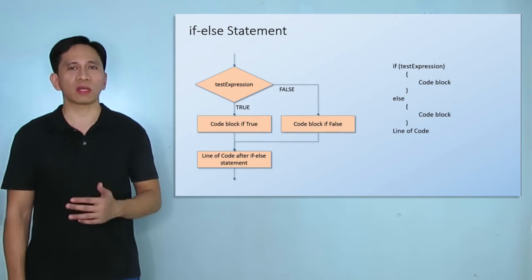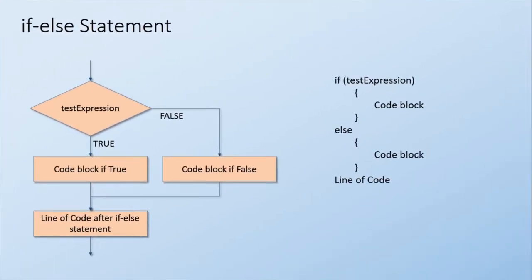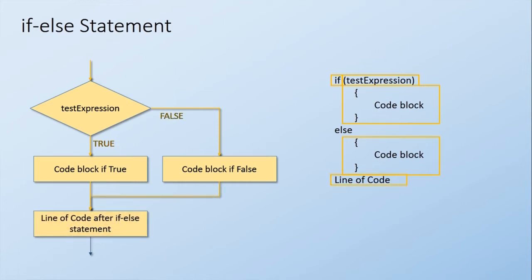The next one is an if-else statement. It also starts with the if keyword, followed by a test expression enclosed in parentheses. When the test condition is true, it executes the code block enclosed in curly braces, then proceeds to the line after the entire if statement. If the test expression is false, instead of exiting the if statement, the program executes the code block inside the curly braces after the else keyword, then also proceeds to the line after the entire if statement, then proceeds to the rest of the program.